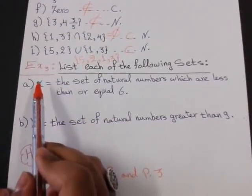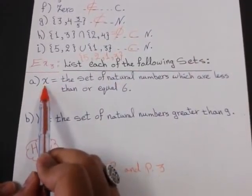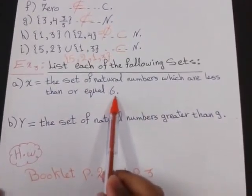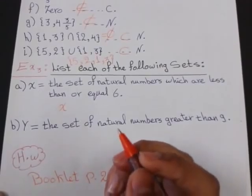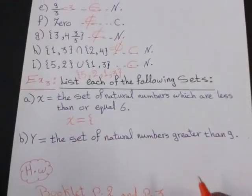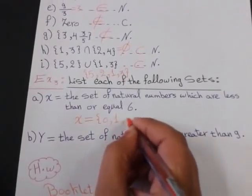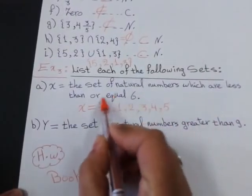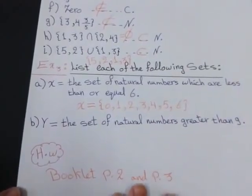Example number 3. List each of the following sets. X equals the set of natural numbers which are less than or equal 6. List means I make a listing method. The first step, write the name of the set by capital letter. Then open braces. Less than means 0, 1, 2, 3, 4, 5. Or equal, I will take 6 with me. So, 5 and 6. Close braces.